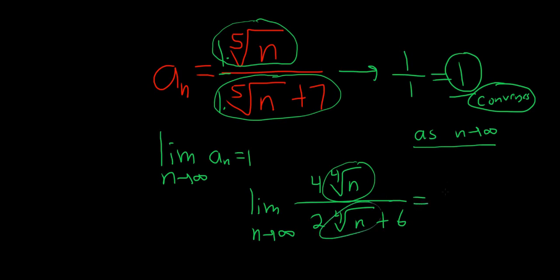So this is equal to 4 over 2, which is equal to 2. So whenever the growth rates are the same, you can just take the ratio of the leading coefficients. I hope this video has been helpful.